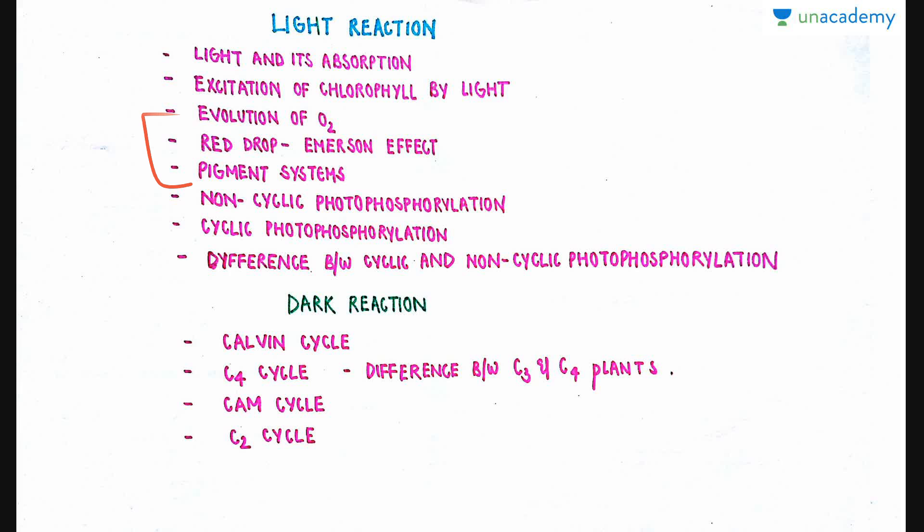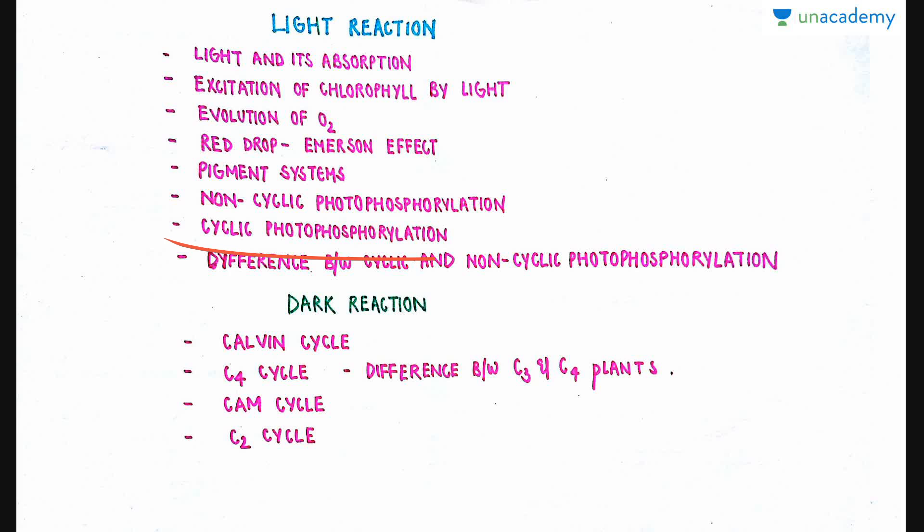Why is it required by plants? In the previous videos I have already talked about the main products being formed in light reaction: assimilatory powers in the form of ATP and reducing powers in the form of NADPH2. The main important thing that cyclic and non-cyclic photophosphorylation does is the preparation of these assimilatory powers — ATP — and the reducing powers, NADPH2.